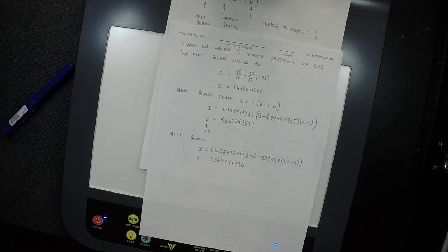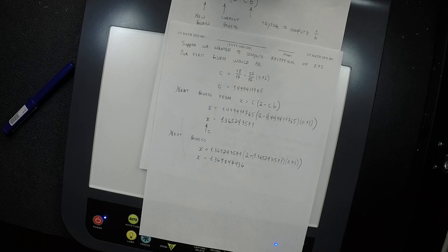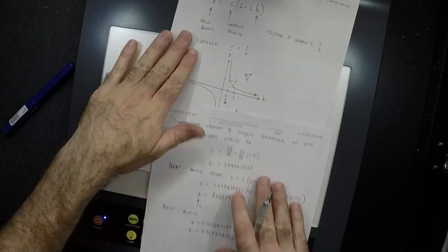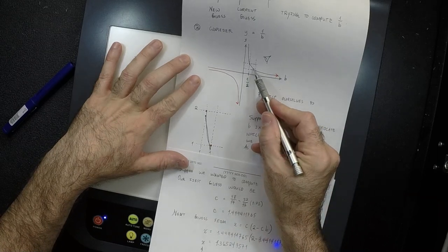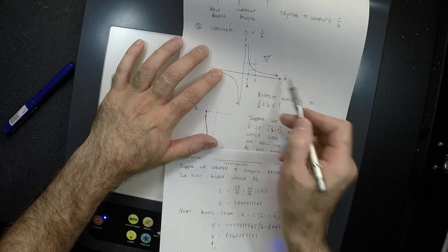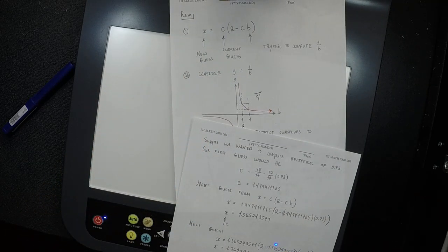There's a problem: this method only allows us to compute reciprocals of numbers between one half and one. That seems limited in scope. For example, what's the reciprocal of 23.70? That's a perfectly legitimate number, but not between one half and one. This method constitutes a way to compute reciprocals only if they happen to fall in that little rectangle. There's a lot of other plot — how will we make the rest accessible to us?